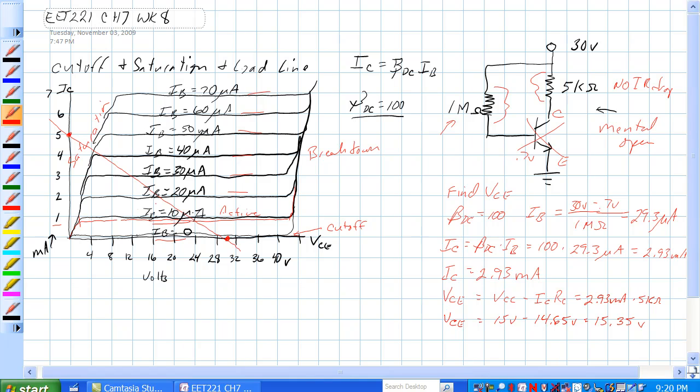So what we would find is at about 15.35 volts, let's put the pin back on here, 15.35 volts. So that's right up to here, should cross at 2.93 milliamps, let's see, that is about right there.